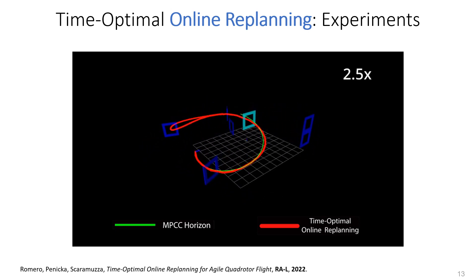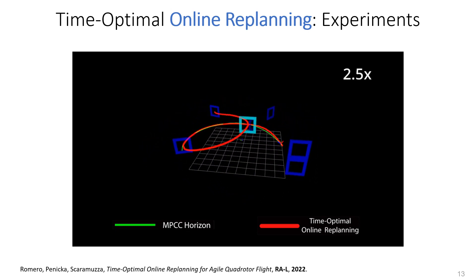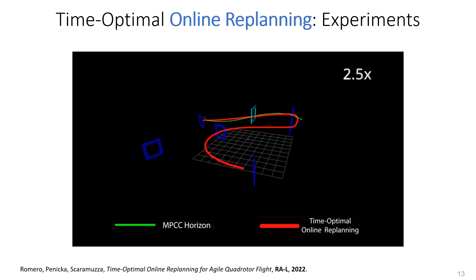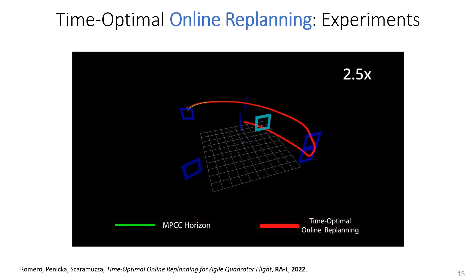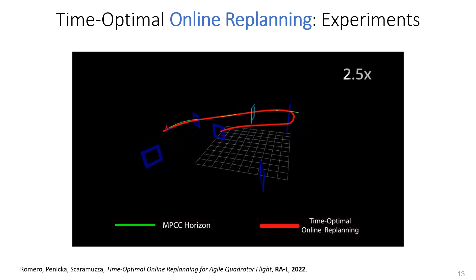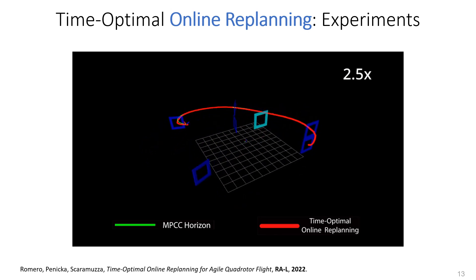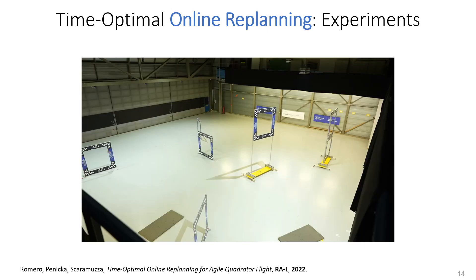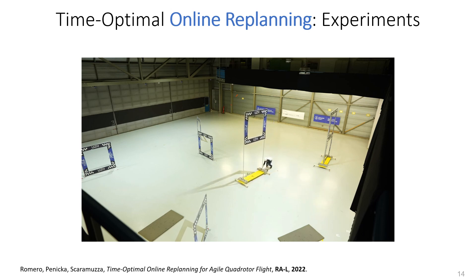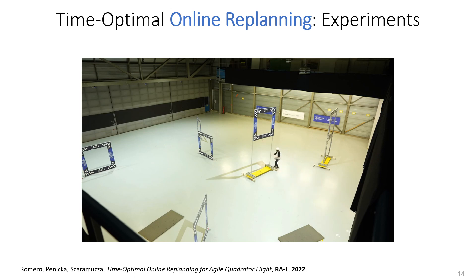Here you can see in red the point-mass model trajectory generation, which generates a nominal path three gates ahead of the current position. This path generation is triggered at every time step, hence online re-planning. In green we show the prediction horizon of the MPCC controller, which is maximizing the progress of the platform online. Note that the center gate is moving from side to side and the drone is still able to pass through it in minimum time. Here we show the same experiment but with a real drone. The drone is flying time-optimally at speeds of more than 60 km/h. The gate is constantly being moved and the drone is still able to fly through it, thanks to the online re-planning capabilities of the proposed method.